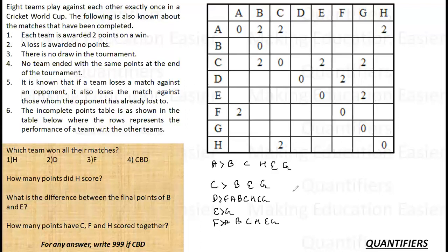First of all, this means that if A has beaten all these teams, F has also beaten all these teams. So, A, B, C, H, E, G. These are all the seven teams. So, D has beaten all the seven teams. And F has beaten everyone except D. I have to be very clear. Then G has beaten none as of now. H has beaten C. So, if H has beaten C and C has beaten B, E, G. So, H has also beaten those.